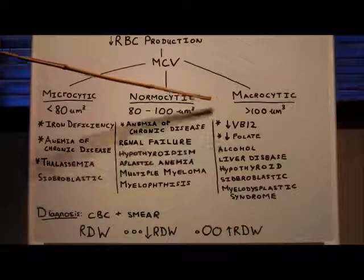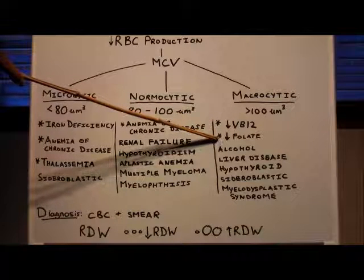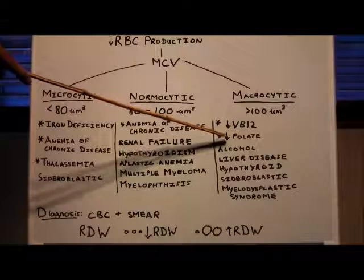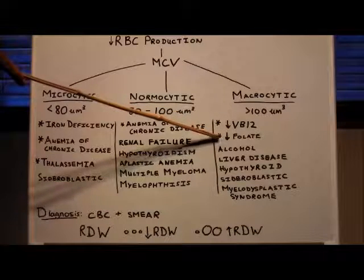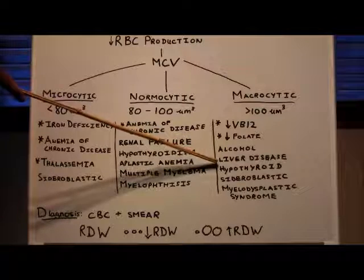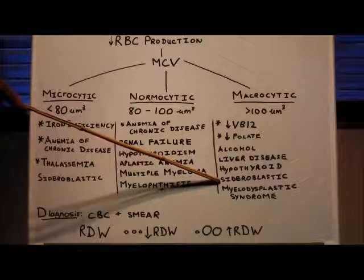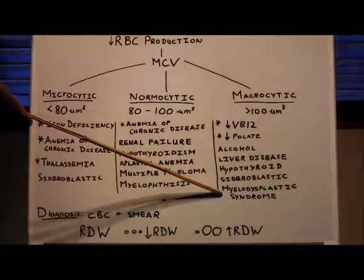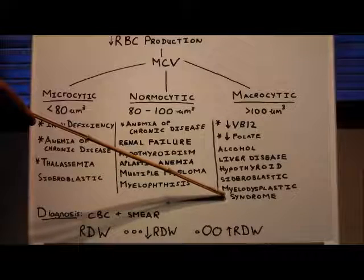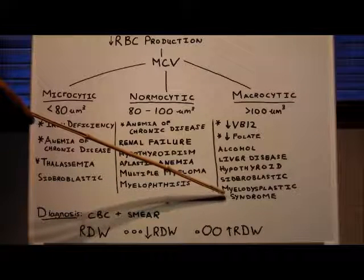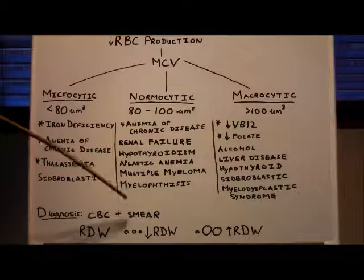The macrocytic anemias include vitamin B12 deficiency and folate deficiency. These two can be grouped into the category of megaloblastic anemias, which means there's a problem with DNA synthesis. Alcohol, liver disease, hypothyroidism, sideroblastic anemia once again, and myelodysplastic syndrome. Myelodysplastic syndrome means there's a problem in the maturation of your cells - the cells aren't maturing properly, and you're not producing red blood cells. And of course, there's plenty of medications that can cause anemia, and it can fall into any one of these three categories.